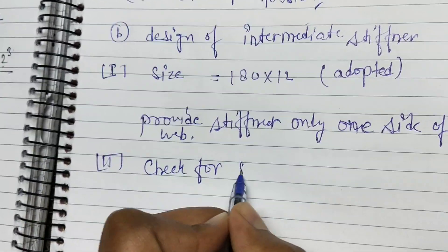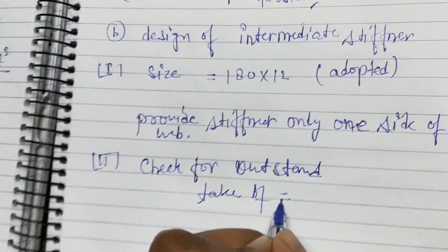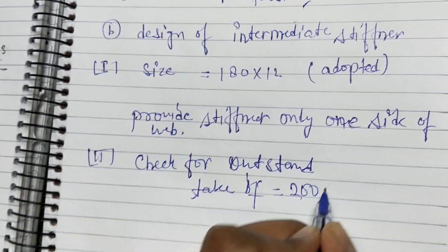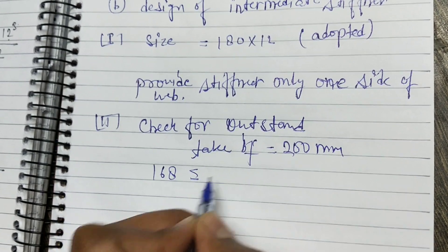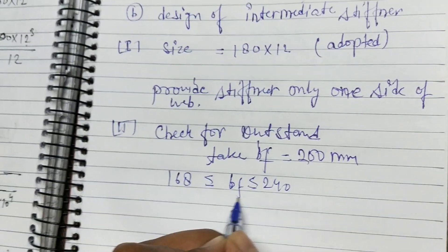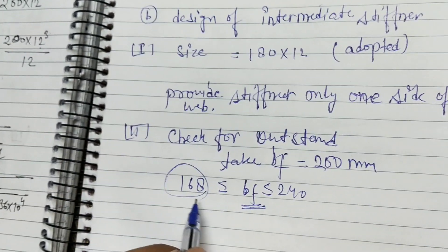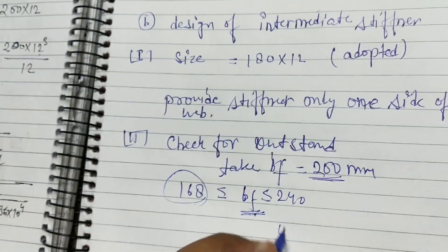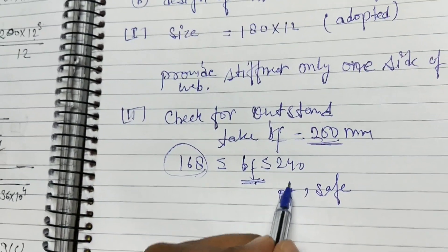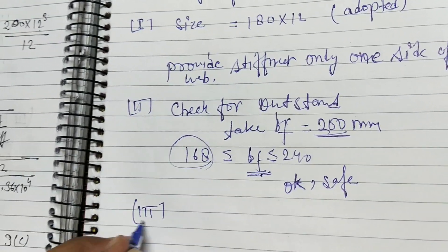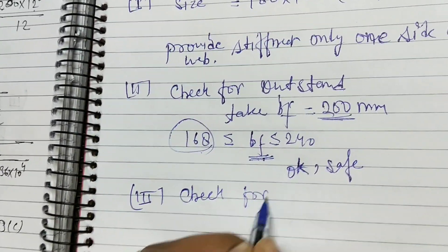Check for outstand of the intermediate stiffener: BF is taken as 200 mm. Checking: 14·TQ·ε gives 168 mm and 20·TQ·ε gives 240 mm. Since 168 ≤ 200 ≤ 240, this check is safe. We can take the minimum or the adopted value; either way it is acceptable.